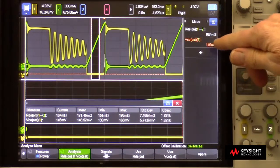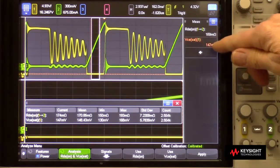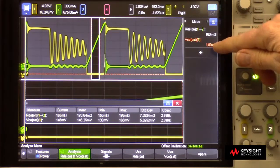And VCE, if I had a bipolar device, I don't. This would be more important if it was a bipolar transistor, is about 140 millivolts.